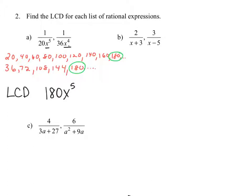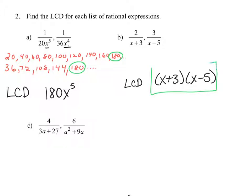In example B, the expressions are 2 over x plus 3 and 3 over x minus 5. So the LCD is going to include one factor of x plus 3 and the other factor of x minus 5. That is our LCD for the second example.